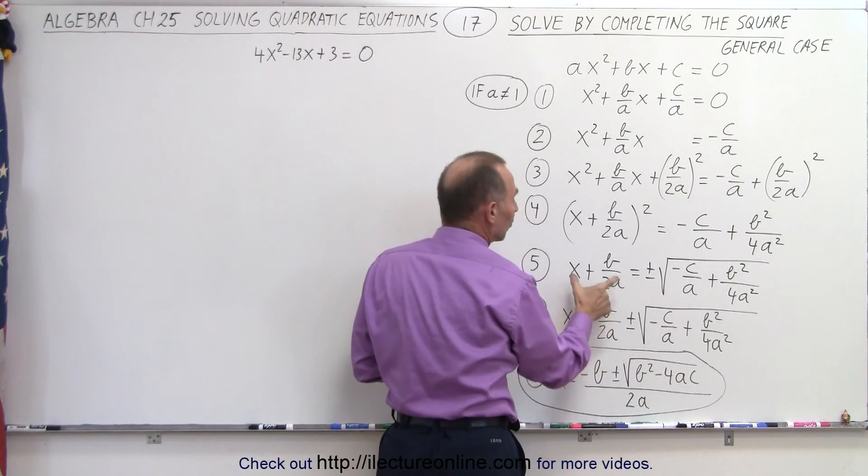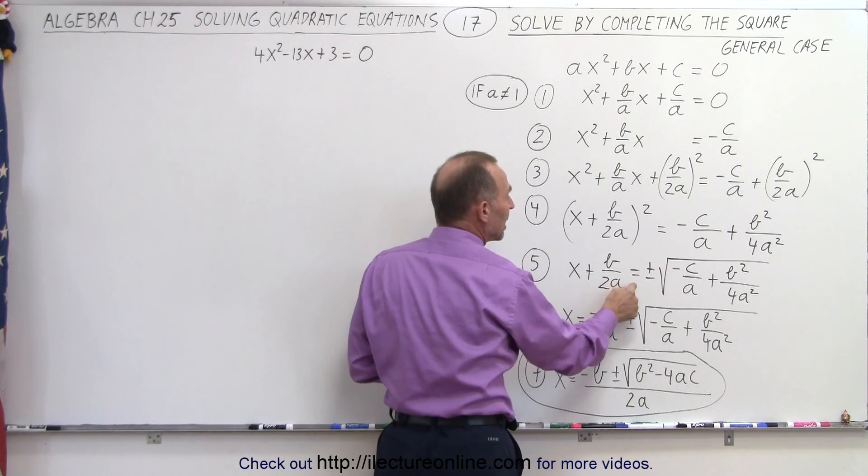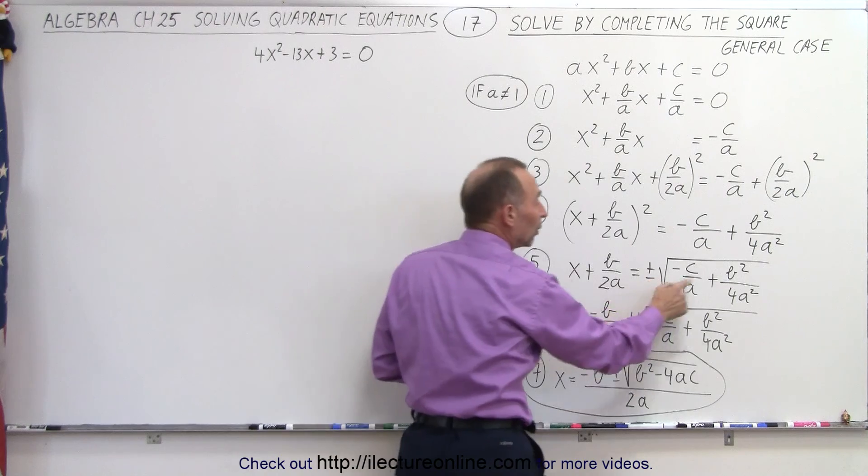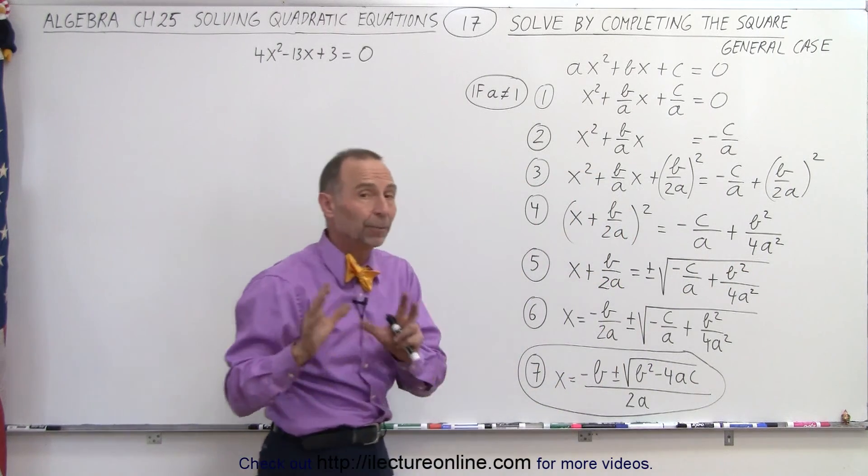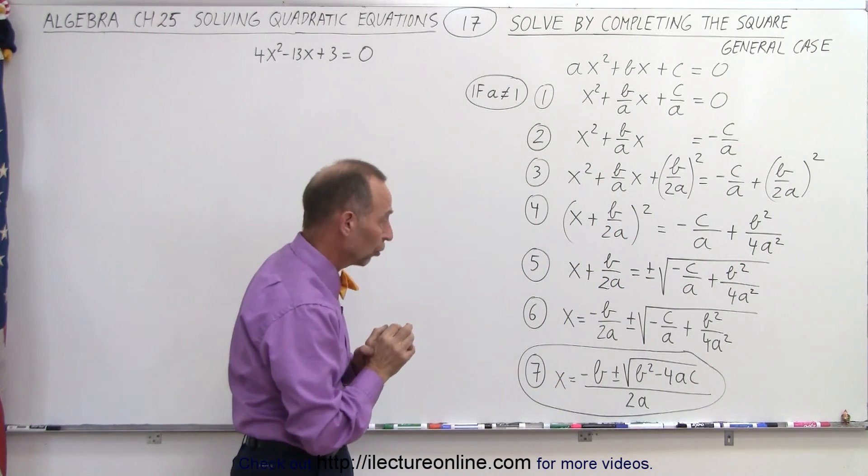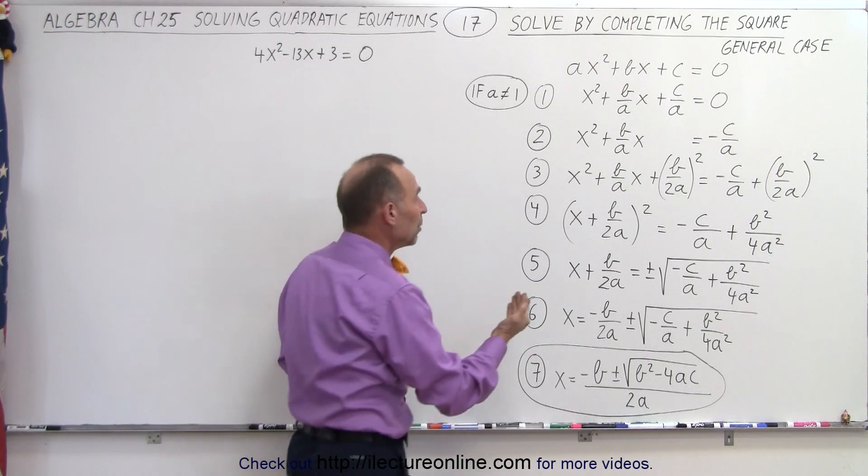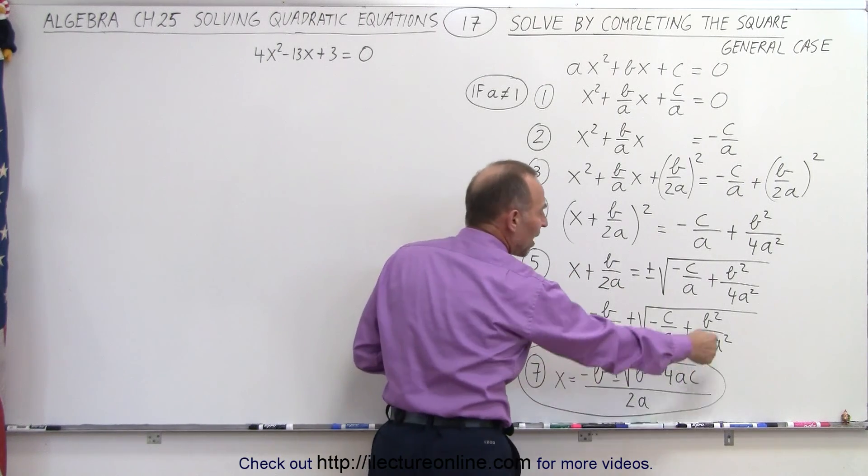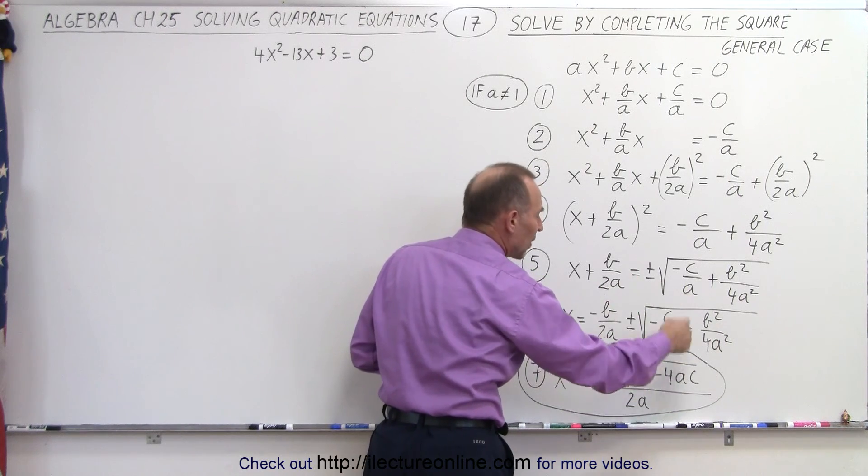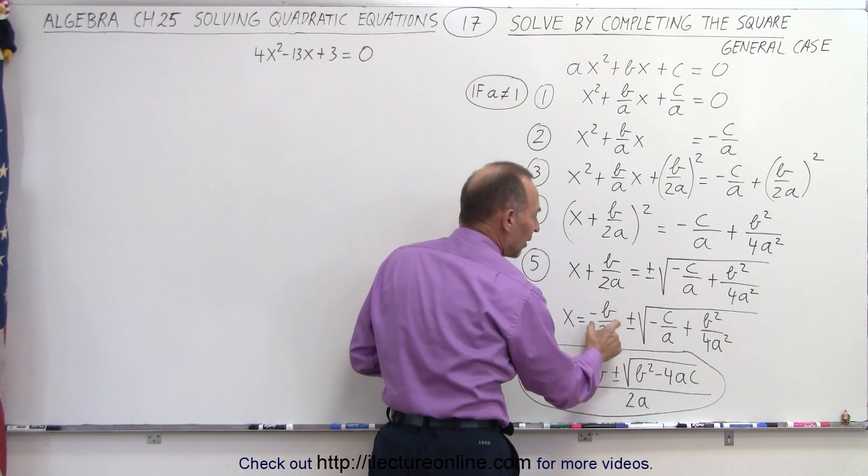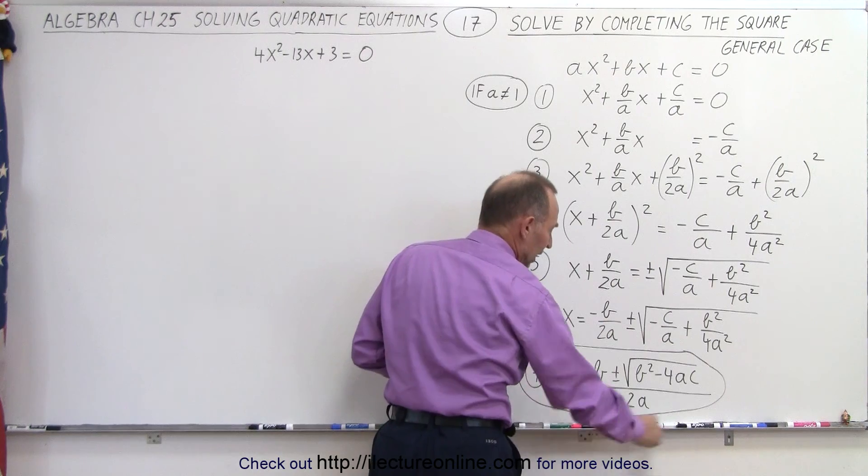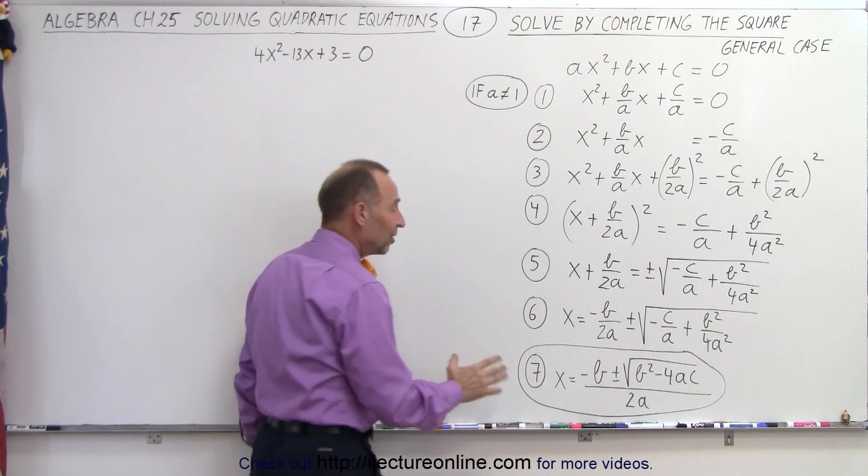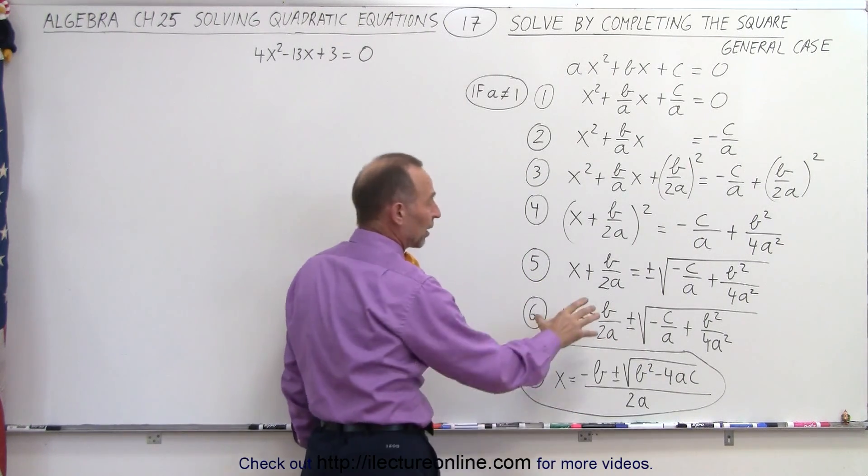Once we have that, we take the square root of both sides, so now we have x + b/2a equals plus or minus the square root of the right side. We need a plus or minus because we want to find both solutions if they're there. And then we move the b/2a term to the right side. Now one more step, algebraically factor out a 2a out of both of the terms.